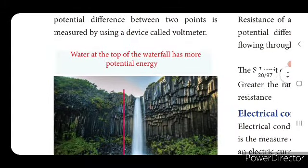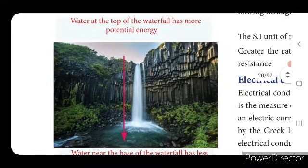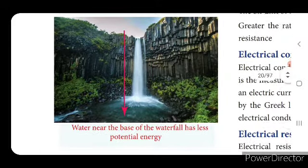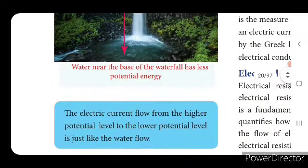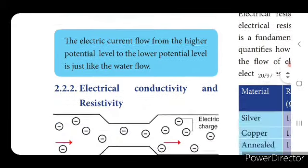Water at the top of a waterfall has more potential energy; water near the base has less potential energy. So electric current flows from the higher potential level to the lower potential level, just like water flow.